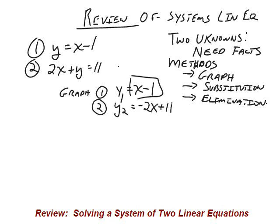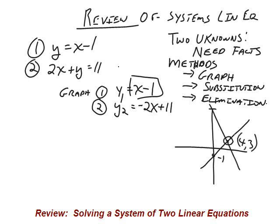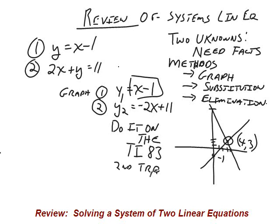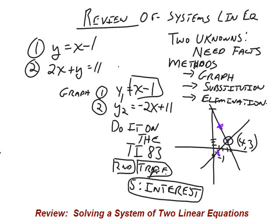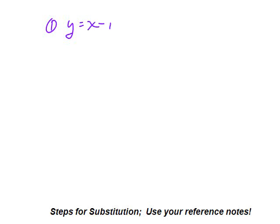The first thing we do is label our equations. We'll graph it here to show what it looks like. If you do it on the TI-83, you press second trace — it's intersect, not interest — and it'll tell you the answer is 4 comma 3. You should always check your answer: if x is 4 and y is 3, is 3 equal to 4 minus 1? Yes. And is 2 times 4 plus 3 equal to 11? Yes. So that's the solution.